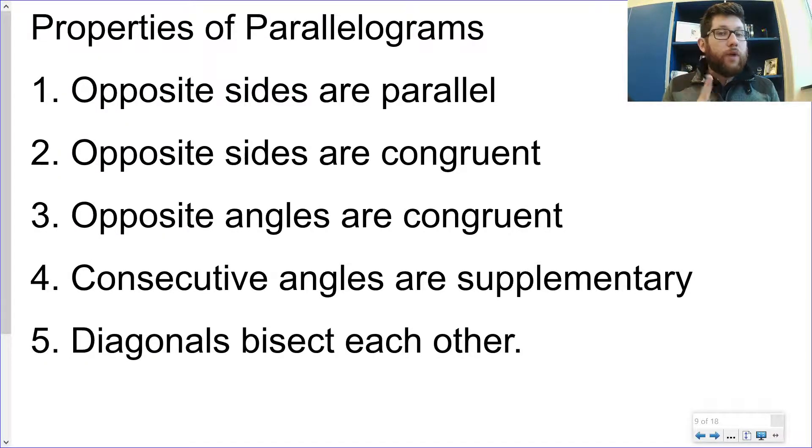Now, before we do that, we've got one more rule we've got to learn. Remember, we talked about opposite sides are parallel, opposite sides are congruent, opposite angles are congruent, consecutive angles are supplementary. So I've got two rules about sides, two rules about angles, and then the last rule here is that the diagonals bisect each other.